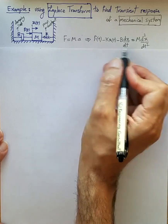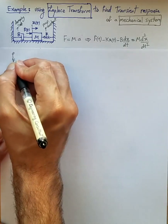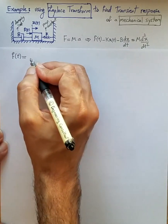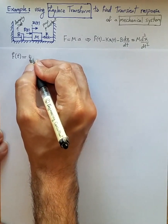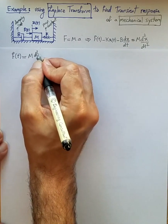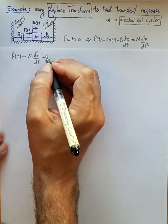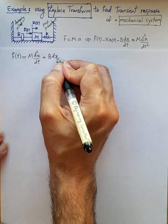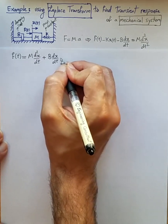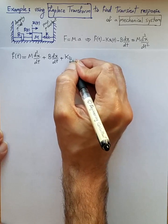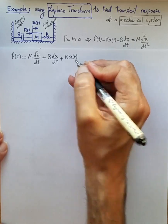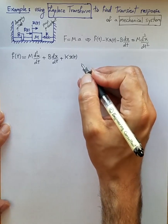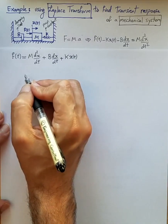We rewrite this keeping f(t) on the left-hand side, and on the right-hand side we have mass times the second derivative, plus the damping coefficient times the first derivative, plus k times the displacement x(t). This is the point where we can start using the Laplace transform to move from the time domain to the s-domain.